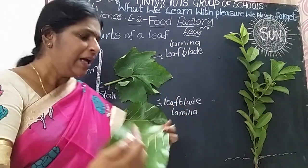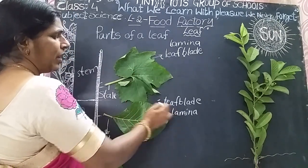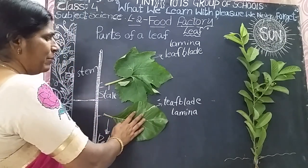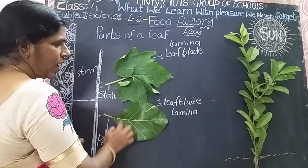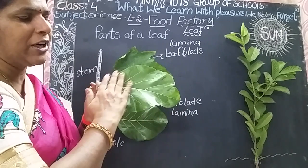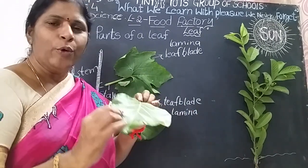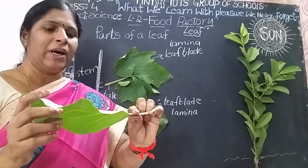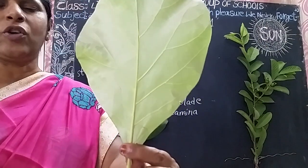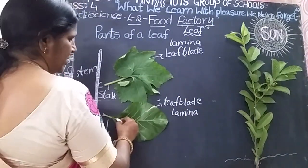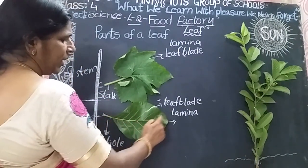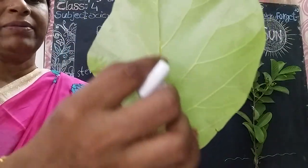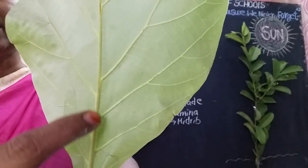In the middle of the leaf, one thick line is present. That is called the midrib. From the midrib, small lines arise — those are called side veins. In the center of the leaf, one thick line is present — that is called the midrib or main vein. These small lines arising from the midrib are called side veins.